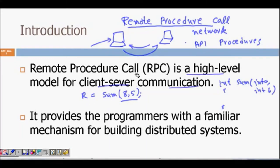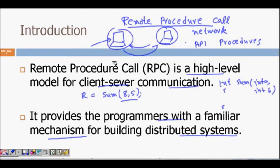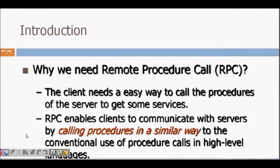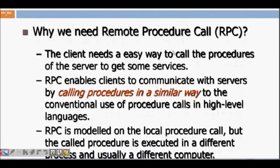Basically there is communication between two processes happening on different computers, or they can be on the same computer. RPC provides programmers with a familiar mechanism for building distributed systems where computers take help from each other. One computer has the capability of calculating something and other computers use remote procedure calls to get those functions done. The client needs an easy way to call the procedures of the server.